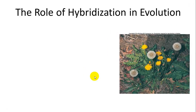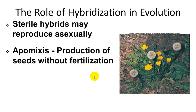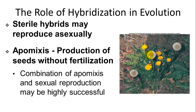Some sterile hybrids may reproduce asexually, since many plants can do this — unlike most animals. Apomixis is the production of seeds without fertilization; dandelions do this — the seed-like structures you blow are actually asexual clones of the individual that propagate a new plant. Dandelions can also reproduce sexually, making them very effective colonizers and a successful weedy species.